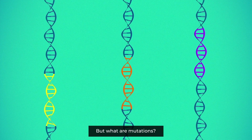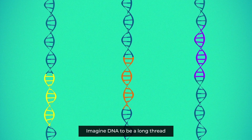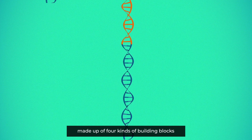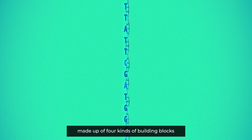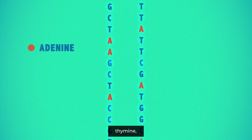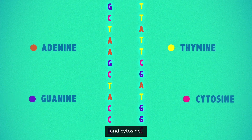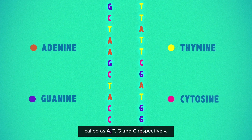But what are mutations? Imagine DNA to be a long thread made up of four kinds of building blocks: adenine, thymine, guanine, and cytosine — called A, T, G, and C respectively.